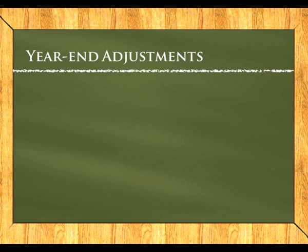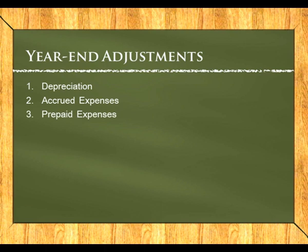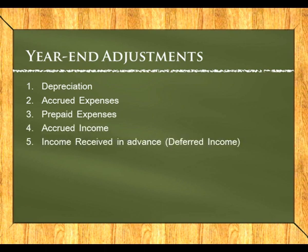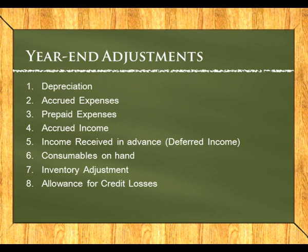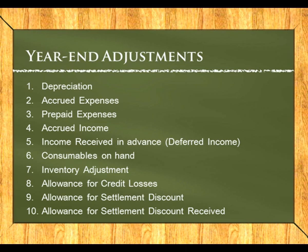For year-end adjustments, there are about 10 common ones: depreciation, accrued expenses, prepaid expenses, accrued income, income received in advance (also called deferred income), consumables on hand, inventory adjustments, allowance for credit losses, allowance for settlement discount, and allowance for settlement discount received.